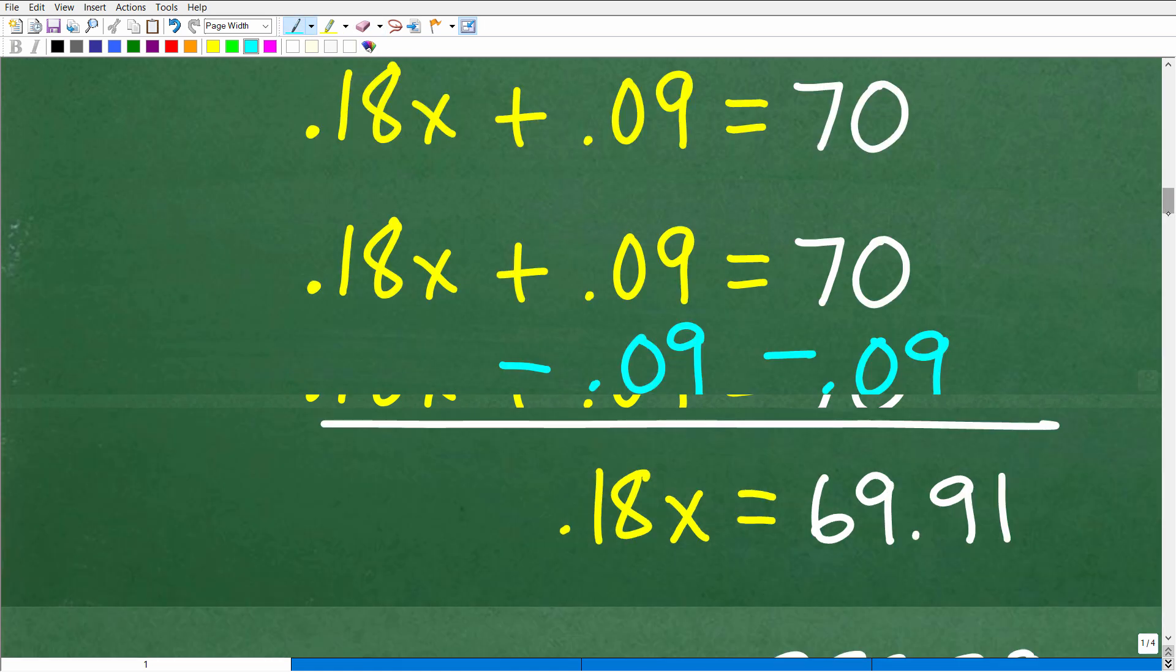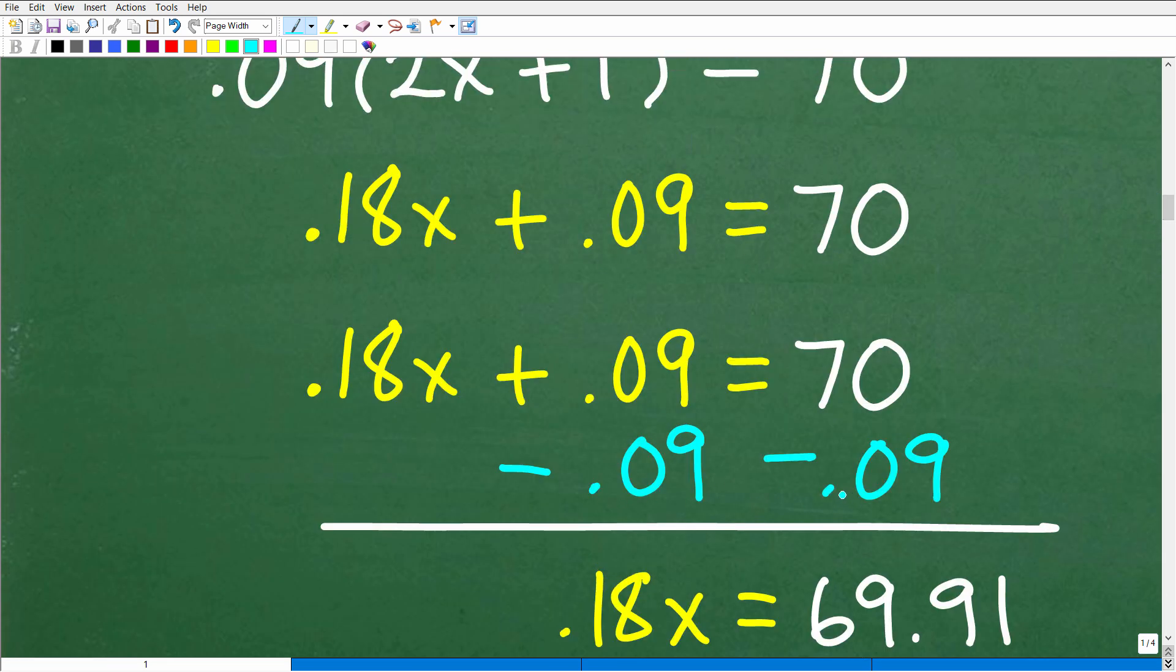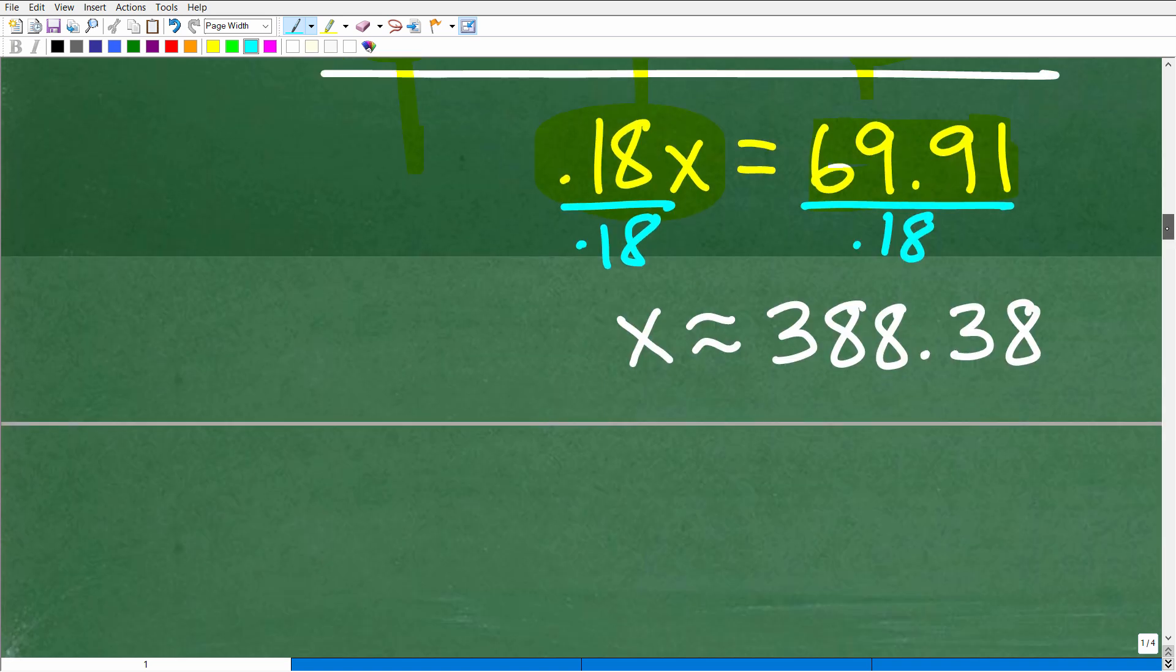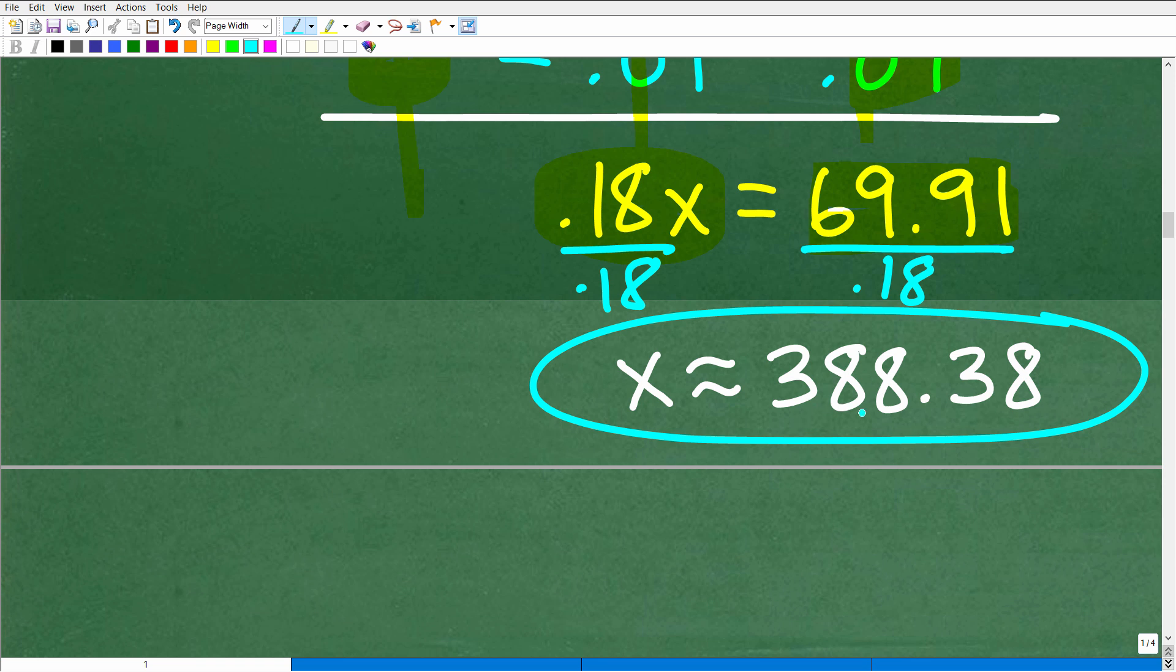And what we're going to do now is subtract this 0.09 from both sides of the equation. So you can see that right here, and then we're going to add down in a column manner, and you should kind of follow my format here. If you're kind of following along, you should have your work look like my work, okay? So 0.18x plus nothing is 0.18x, positive 0.09 plus a negative 0.09, or 0.09, and we're subtracting away. 0.09 is going to be 0. We don't need to write that. 70 minus 0.09 is going to be 69.91. Okay, so what do we need to do here to solve for x? Easy. We just have to divide both sides of the equation by 0.18. So again, use our calculator. We've got 69.91 divided by 0.18, and then, of course, we're going to end up with our answer, which is approximately 388.38. And you can go on and on and on, but this is basically the answer.